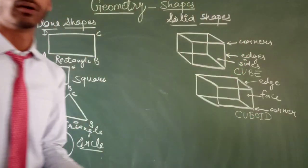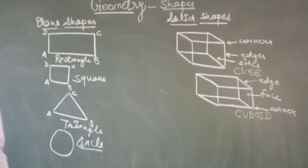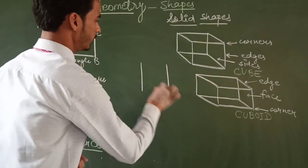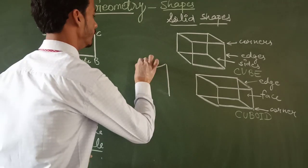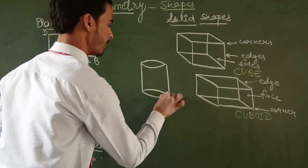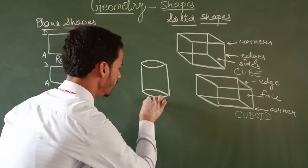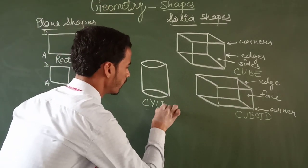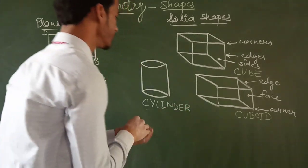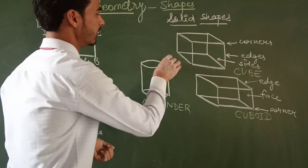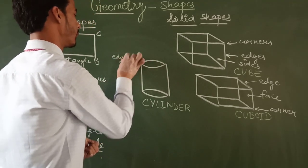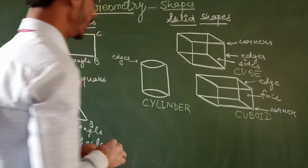This is a cube, and this is a cuboid. Now, we have to know about cylinder. A cylinder has faces and edges. You can see the faces and edges of the cylinder.